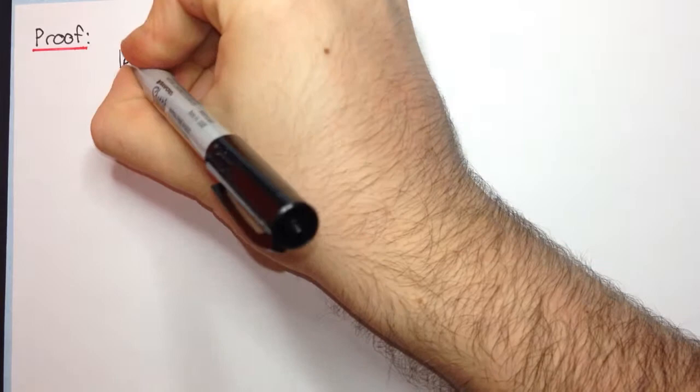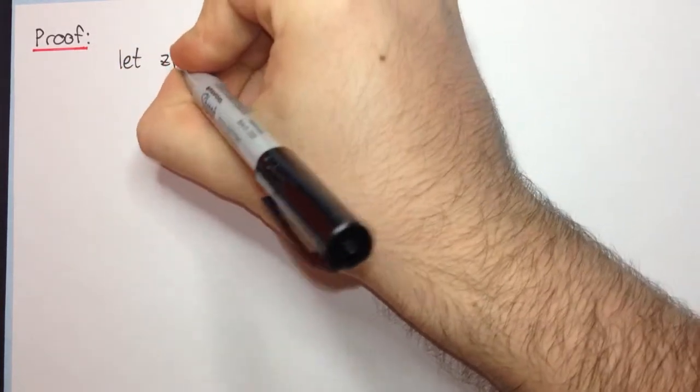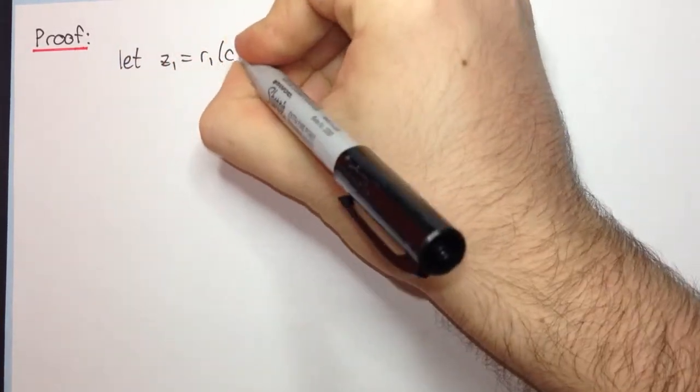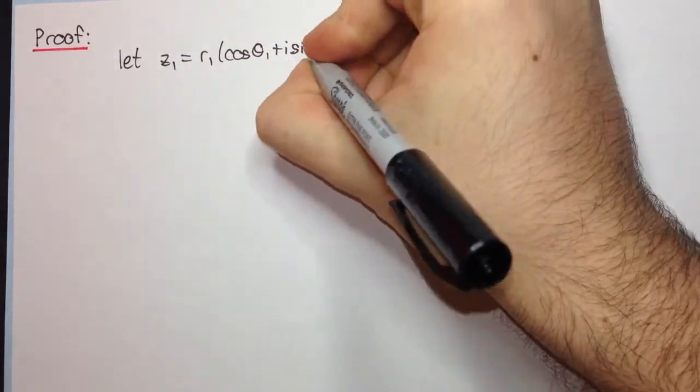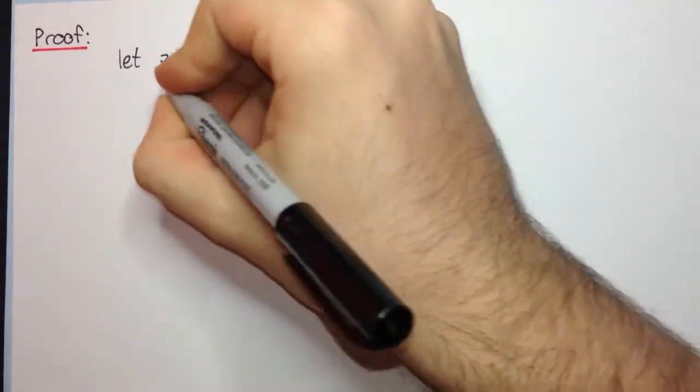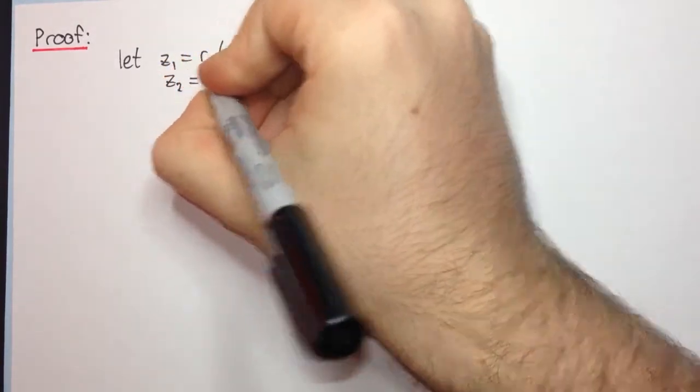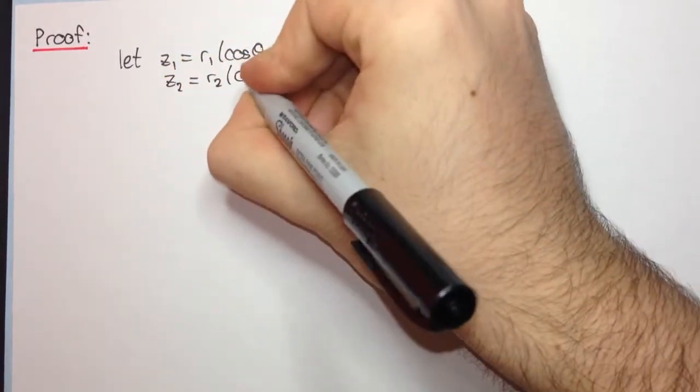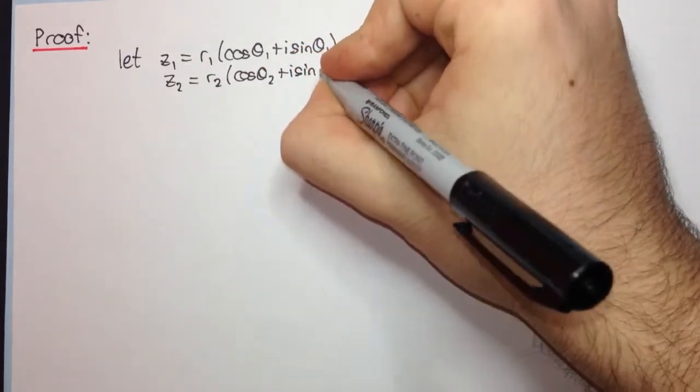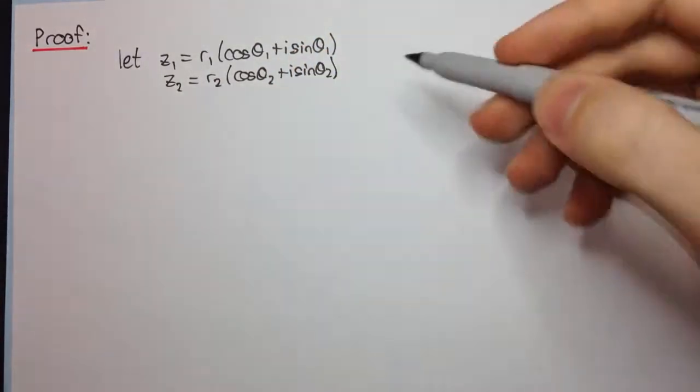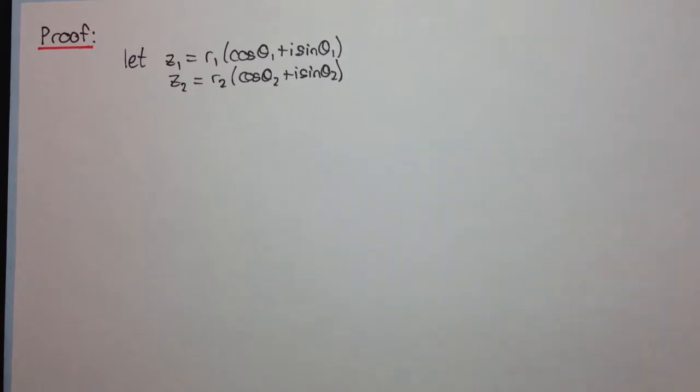Okay, so to start off the proof, let z1 equal r1 times cos theta1 plus i sine theta1. And similarly, we can let z2 equal r2 cos theta2 plus i sine theta2. Right, and so these are just two different complex numbers.